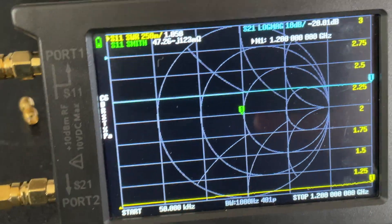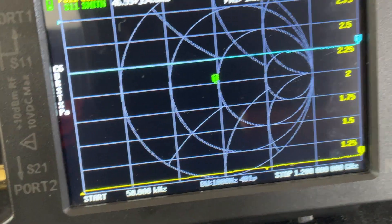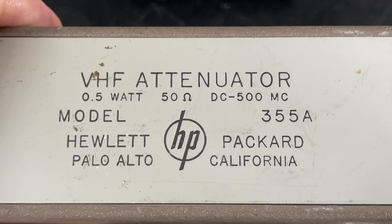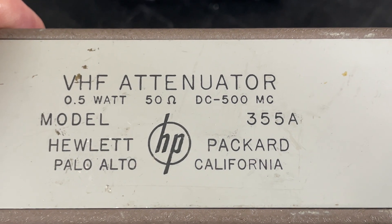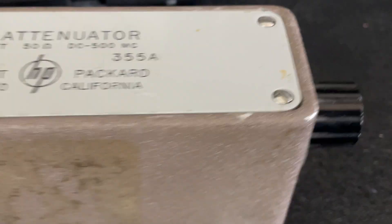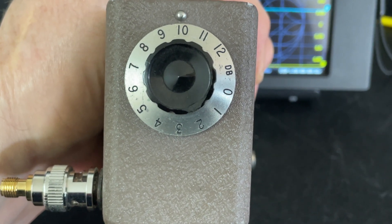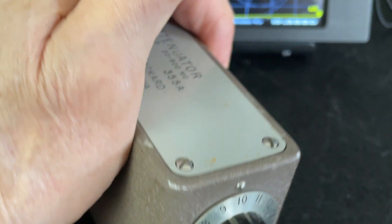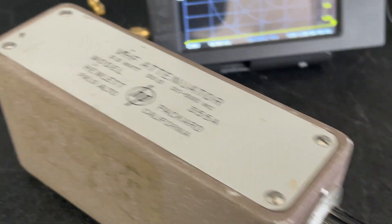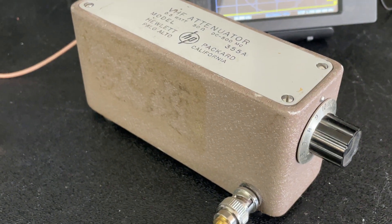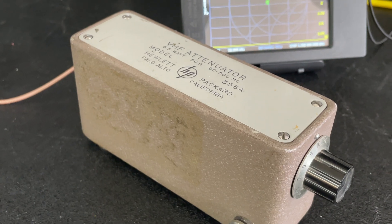One more thing I wanted to show you. I have this HP VHF attenuator, 50 ohms, DC to 500 megahertz. I'm going to show you that it's variable. So it goes from 1 to 12 dB. Let's take a look at that. We'll connect it up and see how it compares to these little short jobs that I made myself.